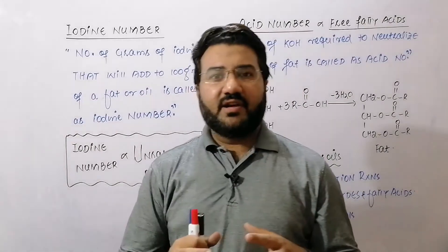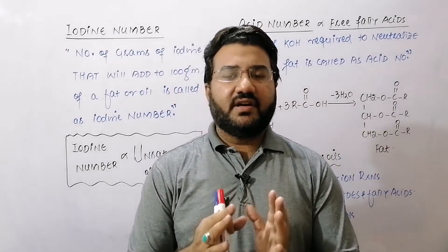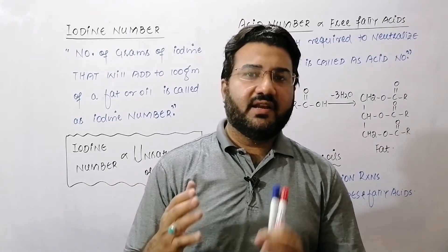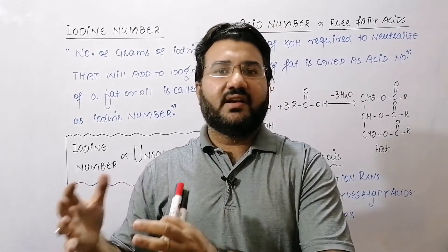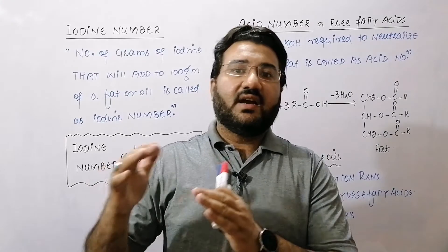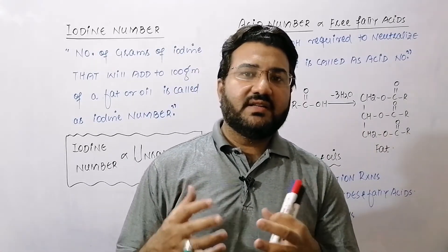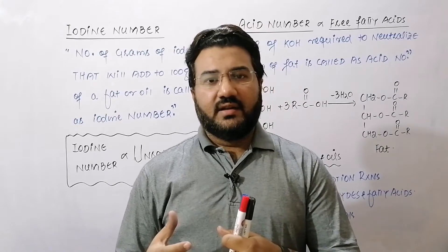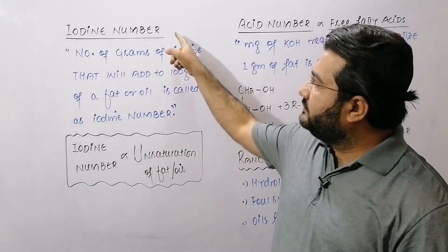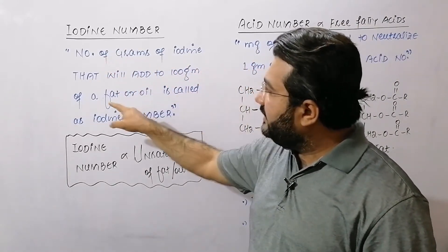What is meant by the iodine number? Fats and oils are basically a mixture of saturated and unsaturated triglycerides. If saturated triglycerides predominate, that tends to be a solid fat. If unsaturated triglycerides predominate, then that is a liquid oil. The degree of unsaturation in a fat or oil — how many double bonds are present — is expressed in terms of its iodine number, which is defined as the number of grams of iodine that will add to 100 grams of a fat or oil.